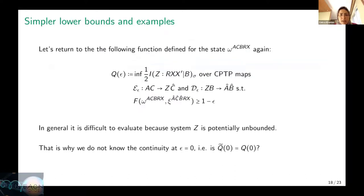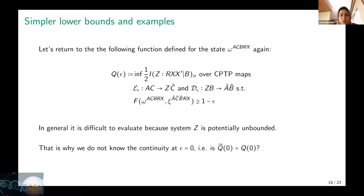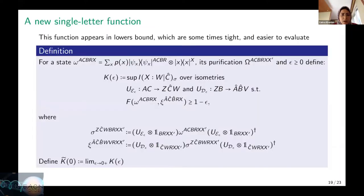I'm going to talk about the interpretation of our results. Looking again at this function q(ε), the problem is that system Z — the compressed information for a single copy — is potentially an unbounded system. This is the main reason we cannot use conventional arguments such as compactness to show whether this function is continuous at zero. This motivates introducing another single-letter function, which is sometimes easier to evaluate and sometimes is actually equal to q(ε).